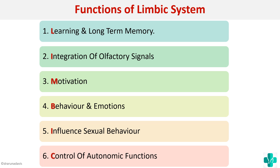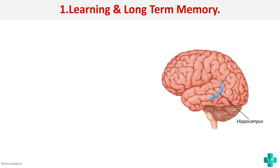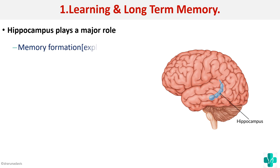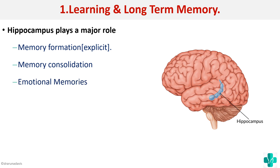The major role in learning and long-term memory is played by the hippocampus. Explicit memory formation — memory about certain events — occurs in the hippocampus. Memory consolidation, that is conversion of short-term memory to long-term memory, also occurs in the hippocampus. Emotional memories are also connected to the hippocampus — for example, seeing a rose and being reminded of a previous situation.